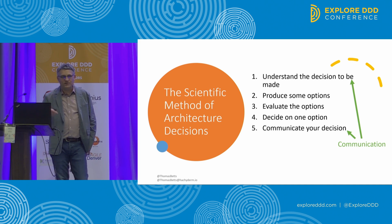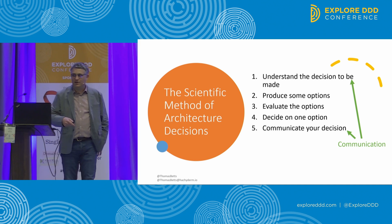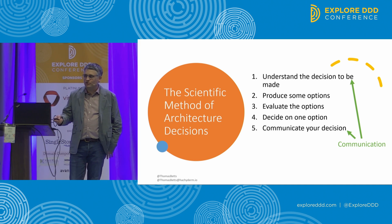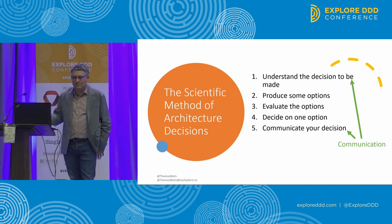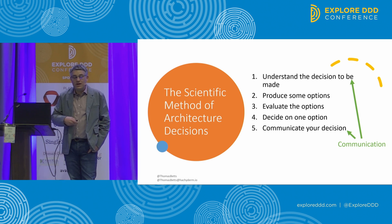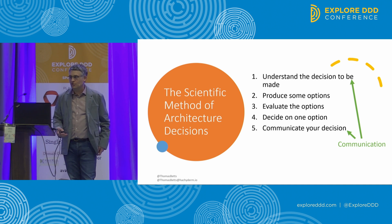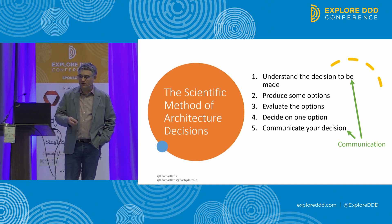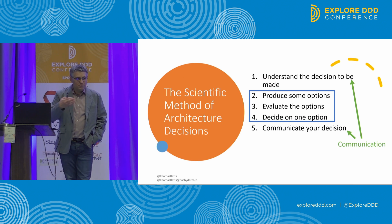If you look at that process, the first and the last steps emphasize communication. If you don't know what you're supposed to be thinking about, everything else after that might be wrong — you might solve the wrong problem or solve the problem incorrectly. And if you can't communicate what your decision is, how do you know whoever's going to implement it does it correctly?